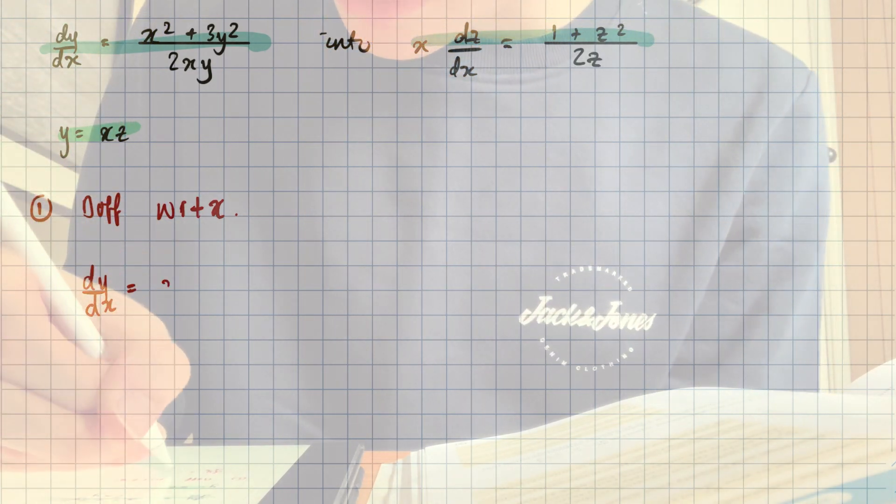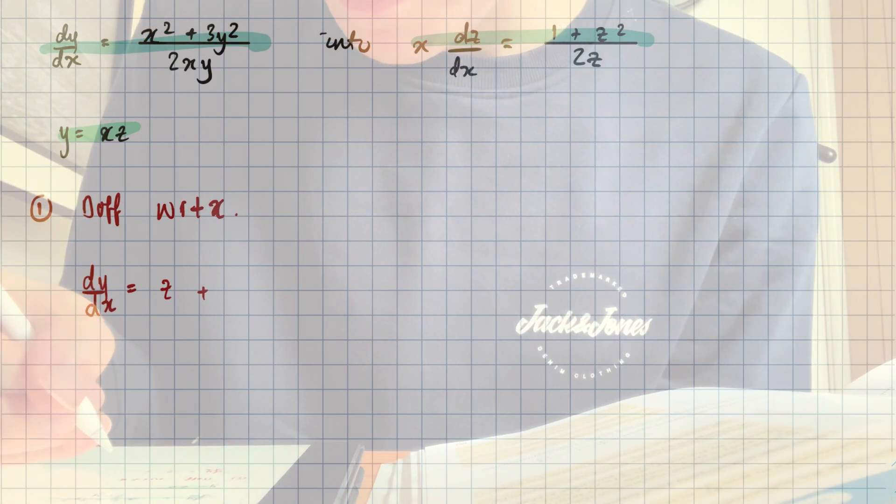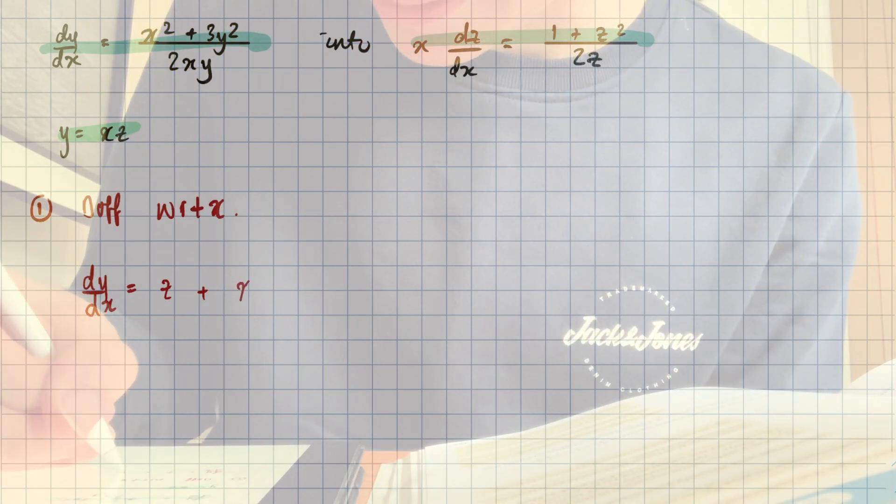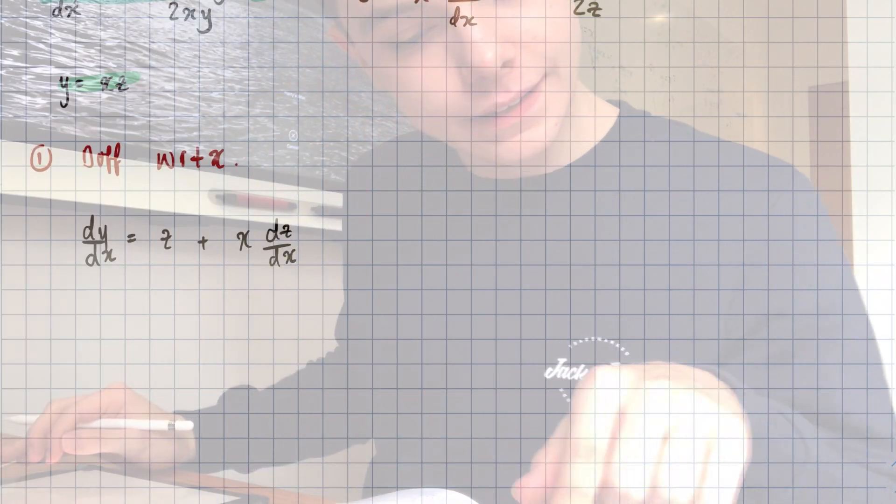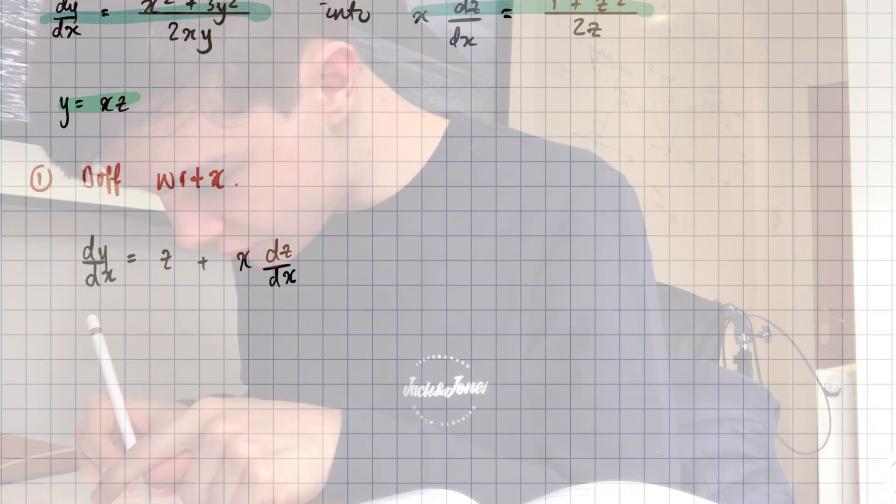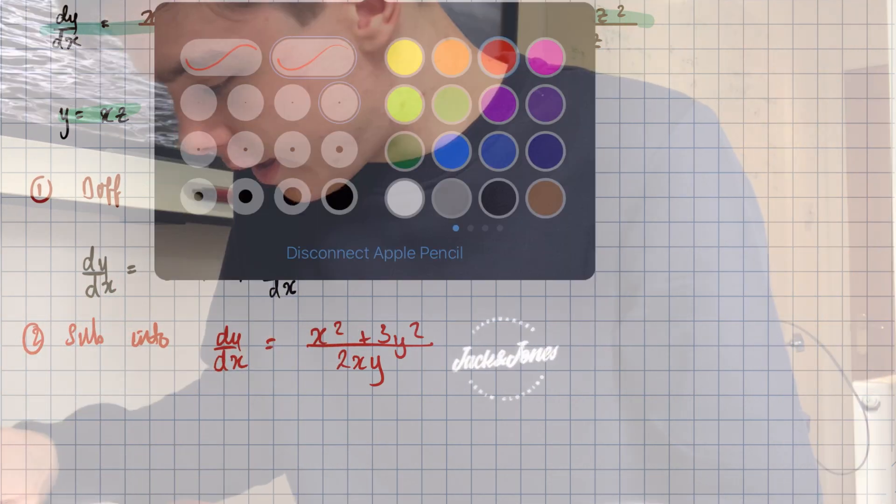So, DY DX, of course. Then, differentiate with respect to X will just give us Z times DZ DX. X times DZ DX. Yeah. Then, what I need to do is substitute into there. So, then, number two.